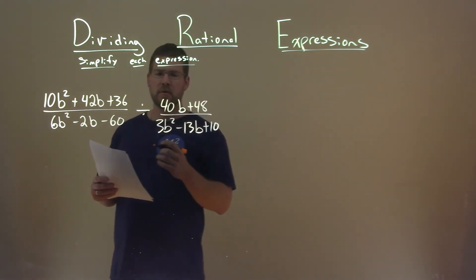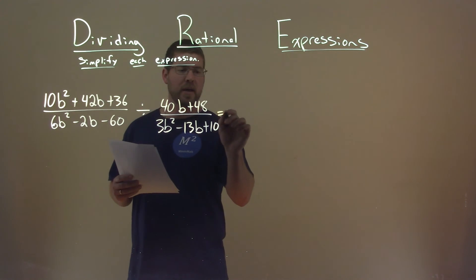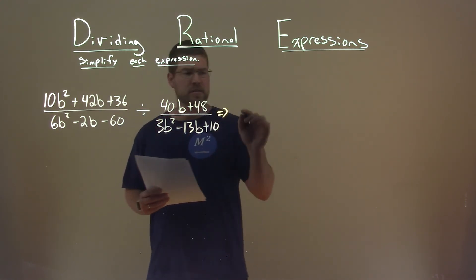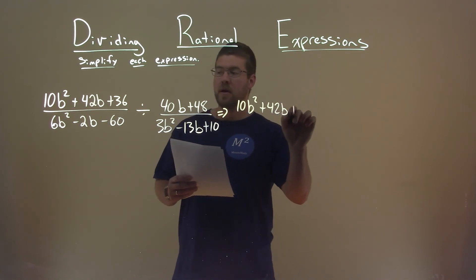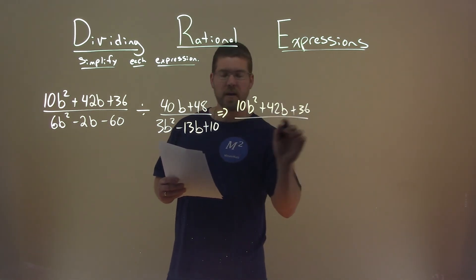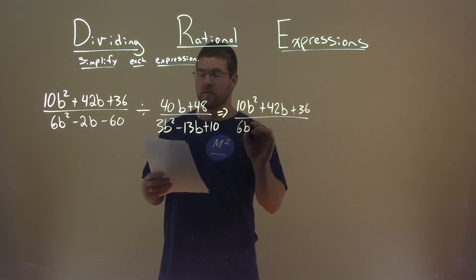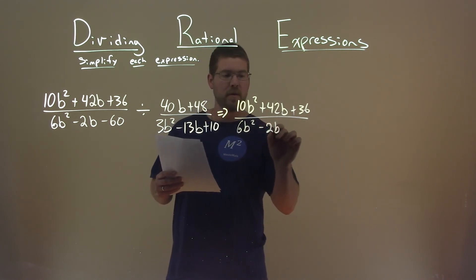First thing I'm going to do is rewrite this as a multiplication problem. So the first fraction stays the same: 10b squared plus 42b plus 36 divided by 6b squared minus 2b minus 60.